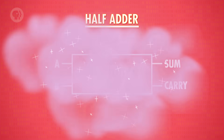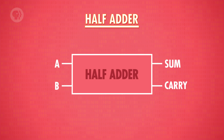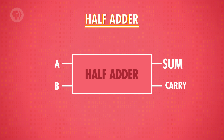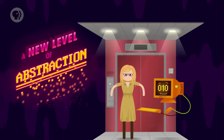Let's abstract away even this level of detail and encapsulate our newly minted half adder as its own component, with two inputs — bits A and B — and two outputs — the sum and the carry bits. This takes us to another level of abstraction.